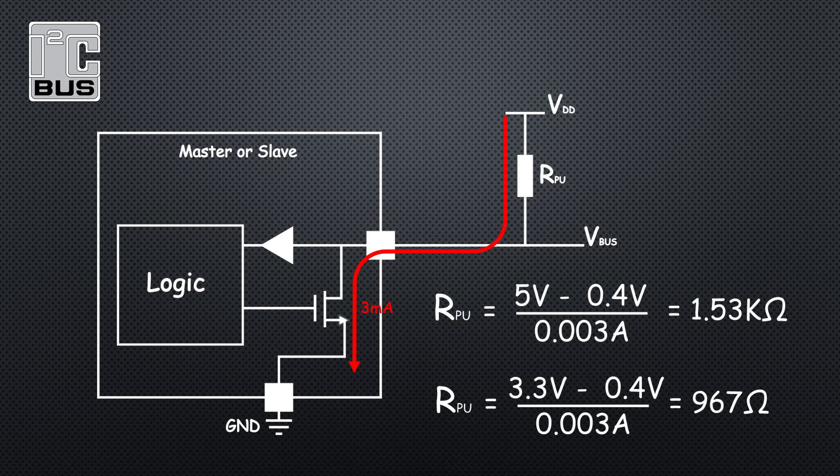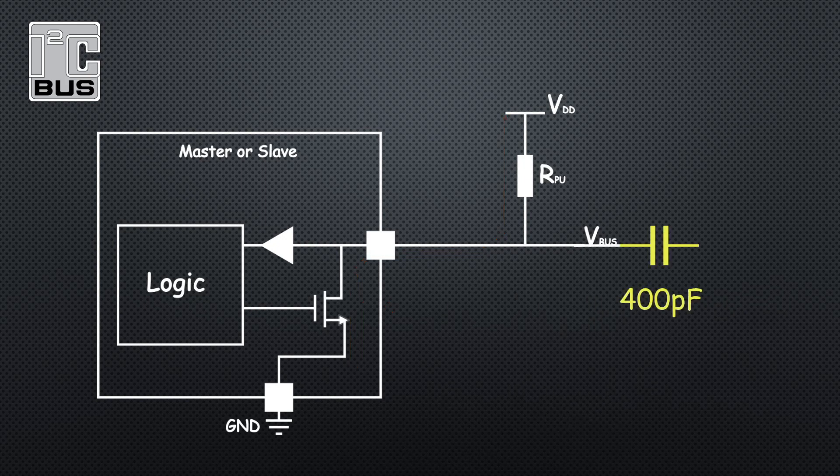The spec puts a maximum limit of 400 pF on bus capacitance, though with its smaller resistors, fast mode plus can be up to 550 pF. It's this capacitance that ultimately constrains the physical length of an I²C bus and why they are generally only a few inches long if you're using wires. Of course, it's preferable to be using a PCB trace where you have more control over the capacitance.